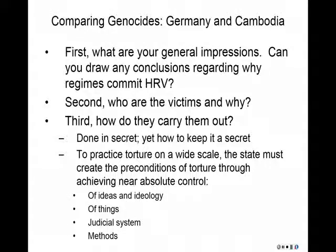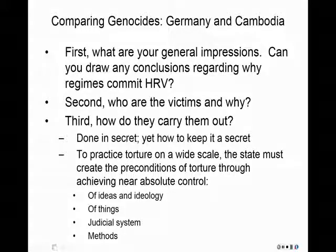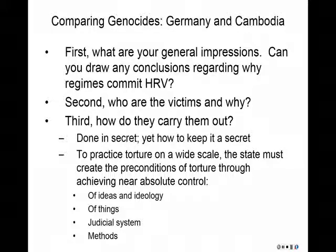One thing you might be asked to do is compare the genocides between Germany and Cambodia. Can you draw any conclusions regarding why regimes commit human rights violations? Why did Germany go down this path? Why does Cambodia? Look at the readings and the lectures and draw conclusions about why these regimes acted this way. Who are the victims and why? How were these genocides carried out — in secret, and how was it kept secret? The state has to control many elements in order for widespread genocide to be successful.